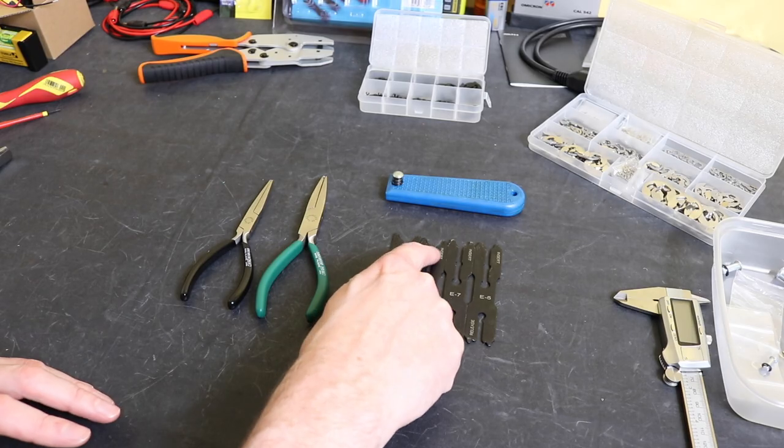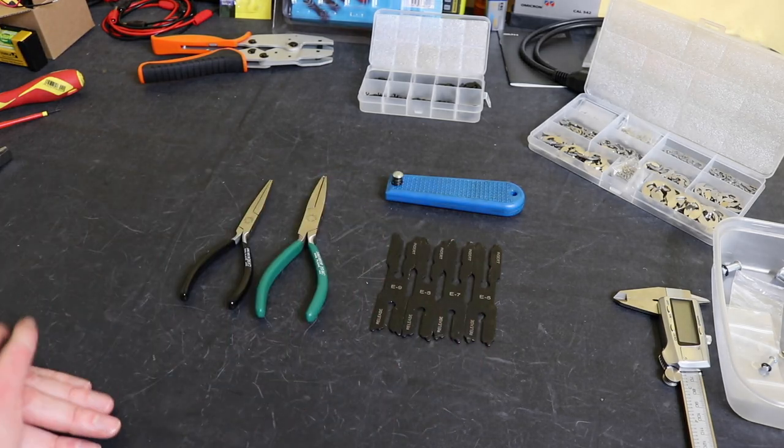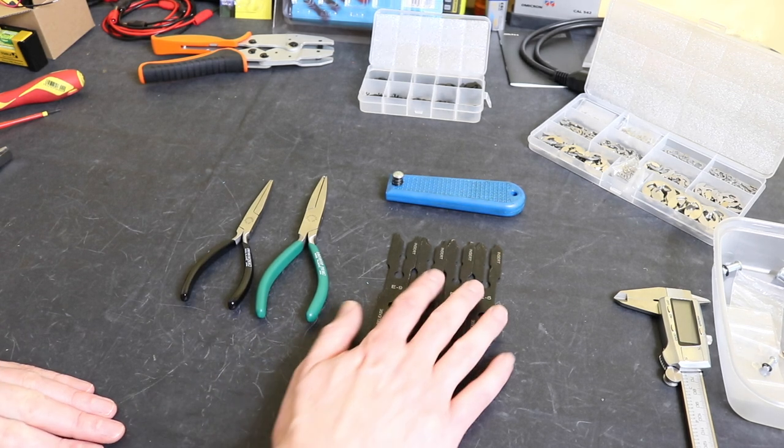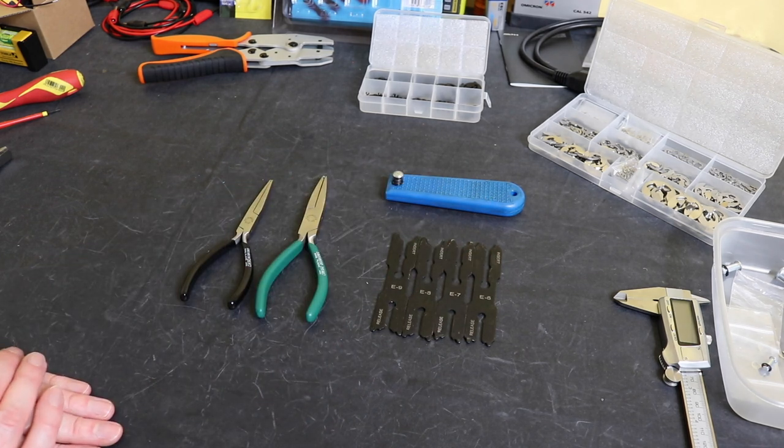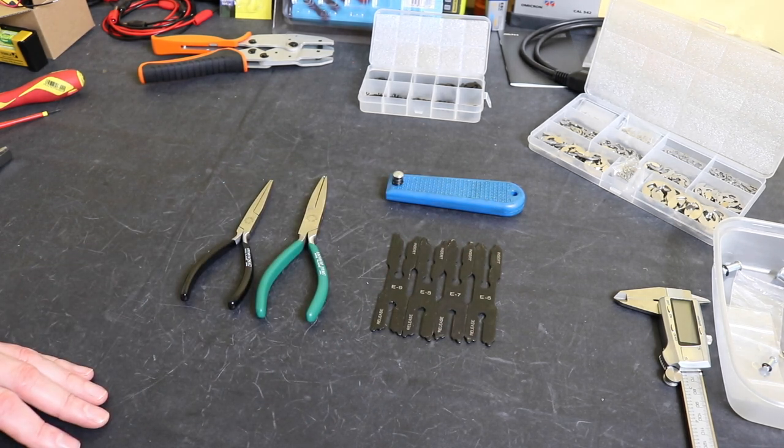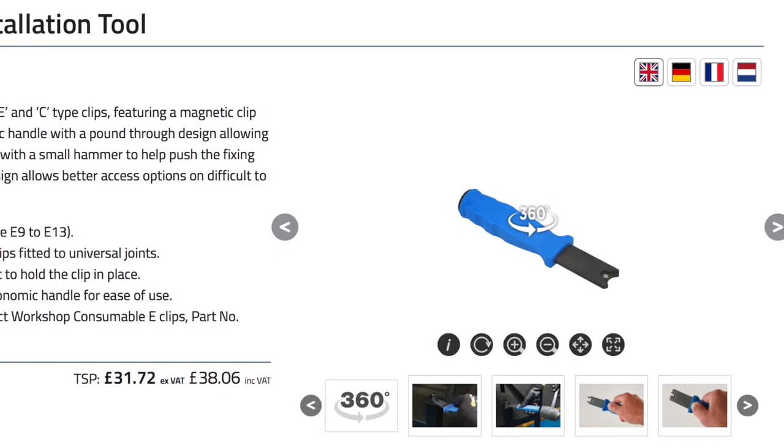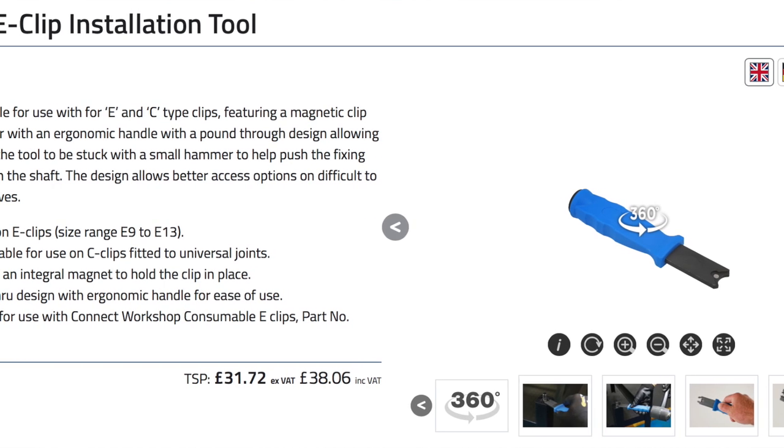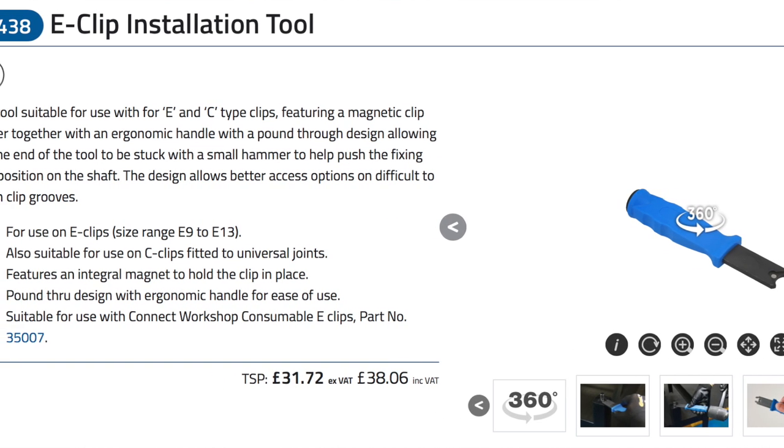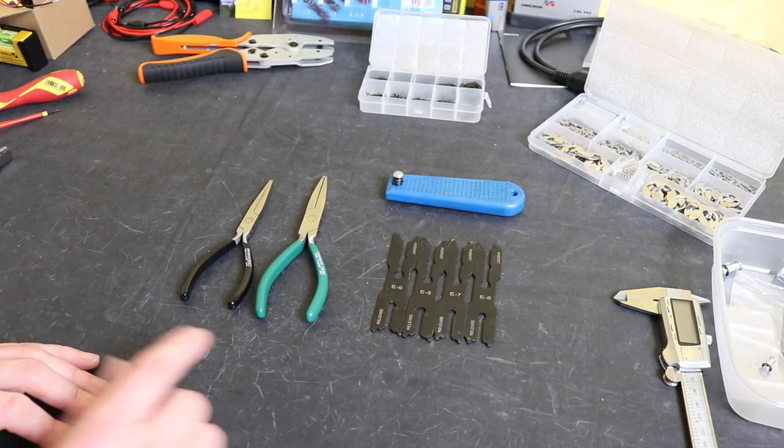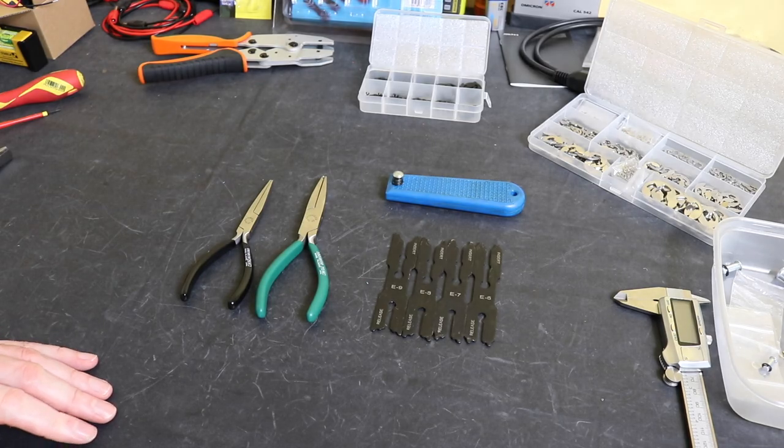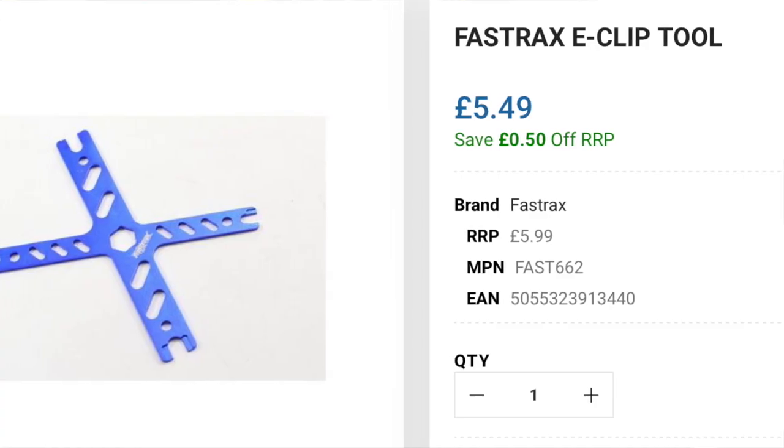There are a couple of other versions out there of these. There is a version from Asta tools which is the A-SEG77 that does E-clips from E9 to E13, and it's purely an insertion tool. Laser also make a similar sort of tool to the Asta tool which is a Laser 8438, seems to be virtually carbon copy of it. Those you'll pick them up for anywhere from 23 to 30 pounds.